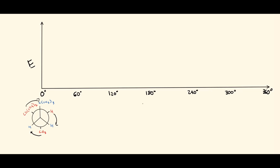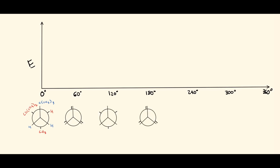We can draw all blank conformers in advance, alternating between eclipsed and staggered because each movement is 60 degrees — 60 degrees gets to eclipsed, another 60 gets back to staggered. Since we're keeping the front carbon the same, we can put in the front carbon exactly as it is on each of these conformers.